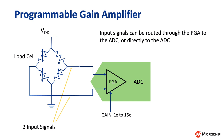Going back to PGAs: a PGA is a programmable gain amplifier, which as its name suggests is simply an amplifier with gain levels that can be set by the user in firmware. The PGA in the Tiny2 family has gain settings ranging from 1 to 16 and can be used in all ADC operational modes, which I'll cover later on in this video.